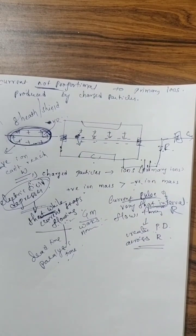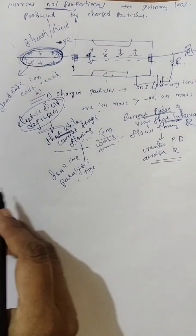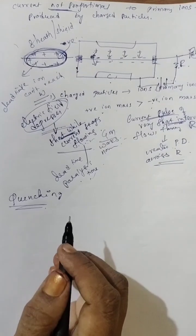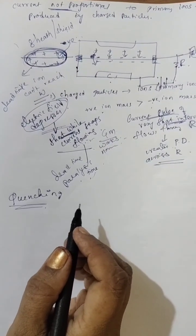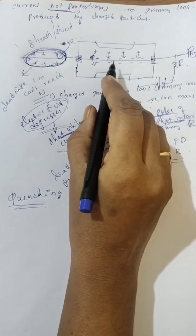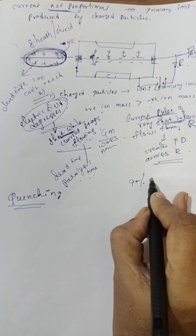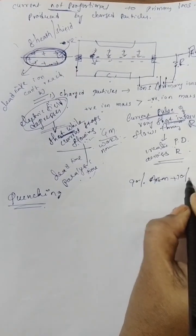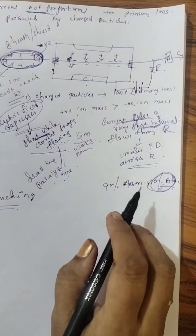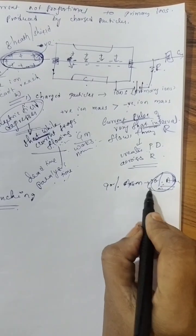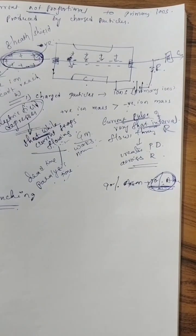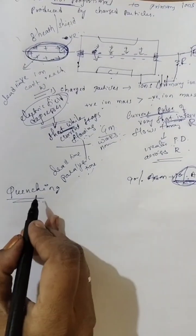Now, the next important thing you have to know is quenching. We said the gas inside the GM counter is a mixture of 90% argon and 10% ethyl alcohol. What is the purpose of this alcohol gas?